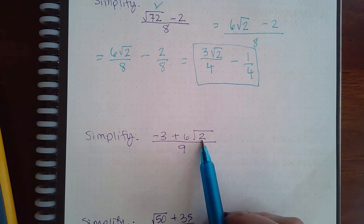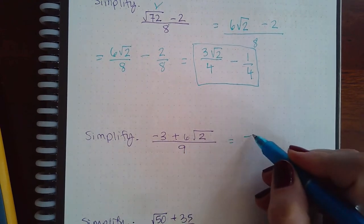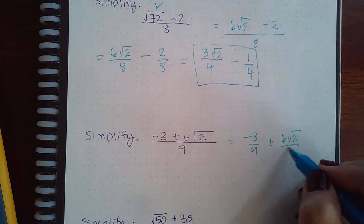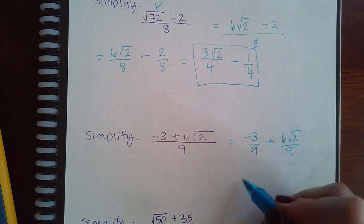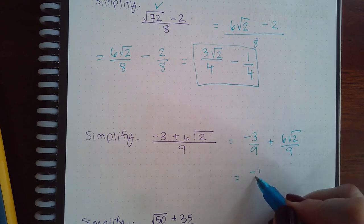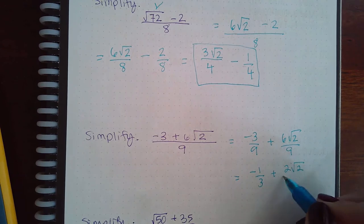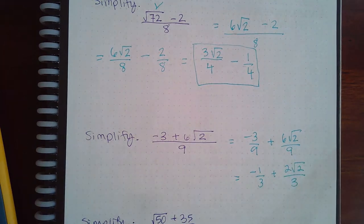The same thing goes here. There's nothing to simplify; square root of 2 is not going to simplify any further. So we're just going to separate the fraction and then reduce each of the individual fractions. If I reduce by 3, I get 1/3. If I reduce by 3 here, I get 2/3, and the square root of 2 just comes down. This is the final answer.